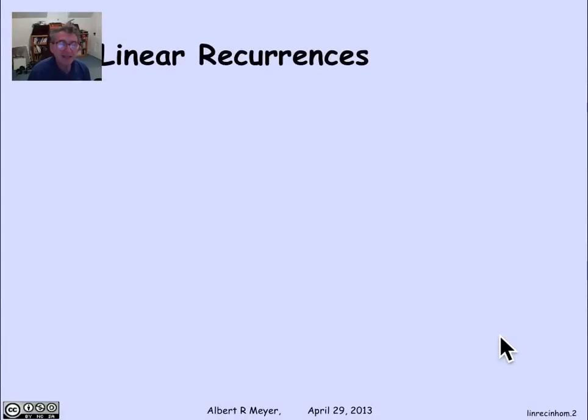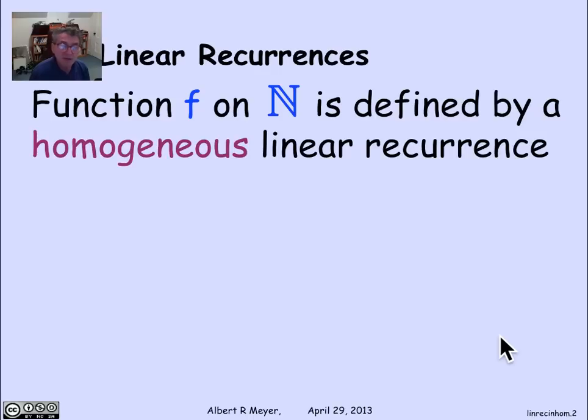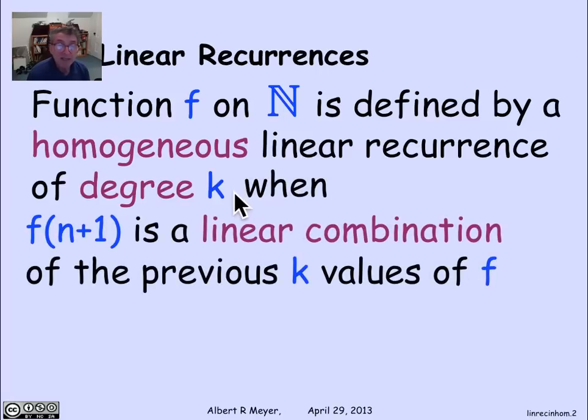Before we get started on that, let's go back and say exactly what a linear recurrence is, since we never actually precisely defined it. A function f on the non-negative integers is defined by a homogeneous linear recurrence of degree k when this function f satisfies the property that f of n plus 1 is simply a linear combination of the previous k values of f.